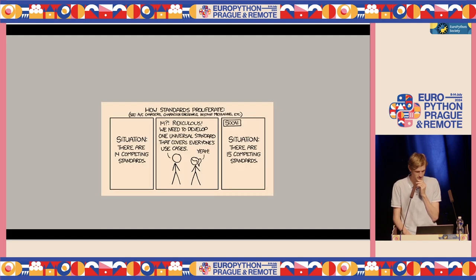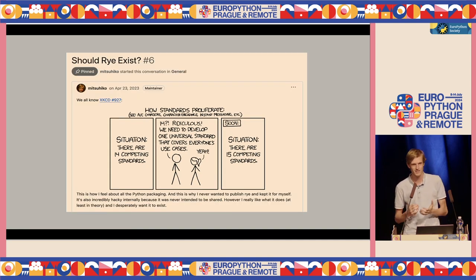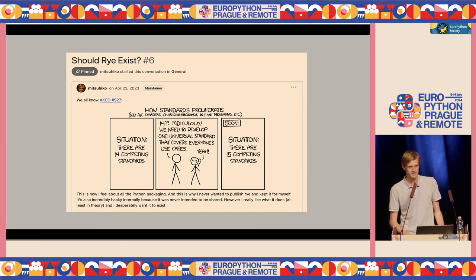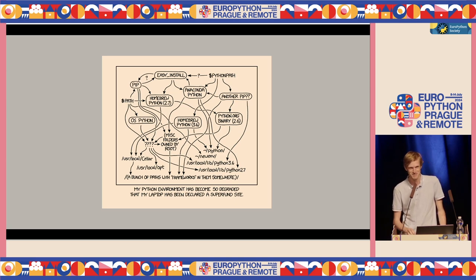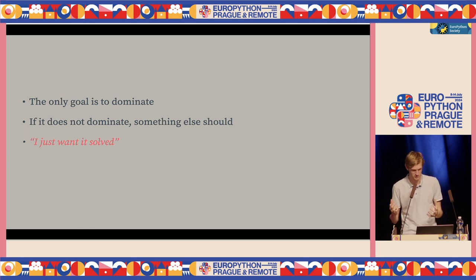The reason I never published this is the XKCD comic — if there are 14 competing standards and yet another one that rules them all, you're going to have another one of those. When I published Rye, I announced it with precisely that comic, because I said I do not want to be yet another Python packaging tool. My only goal was to dominate, or if not, something else would dominate. I just want it solved. I have no desire that my tool is the solution.